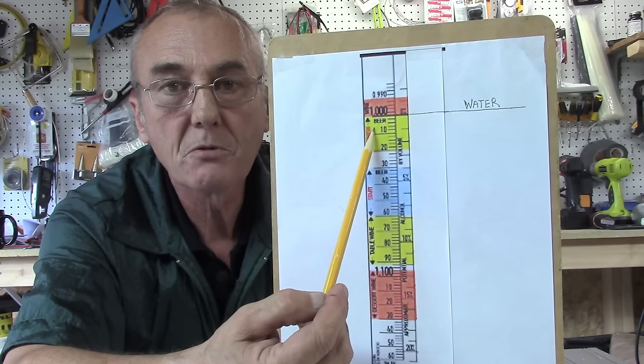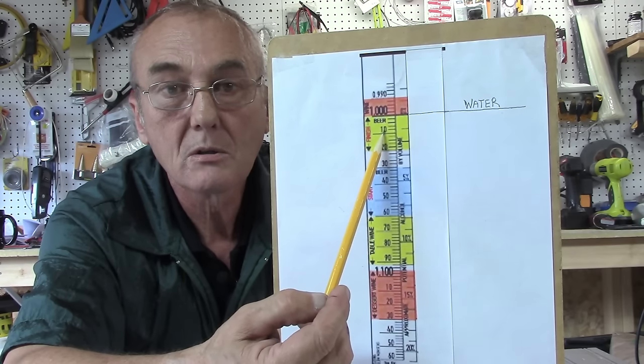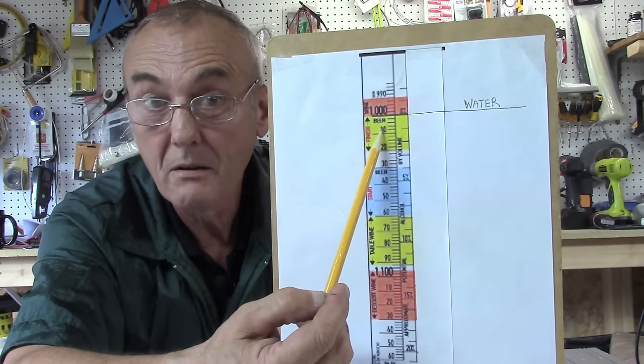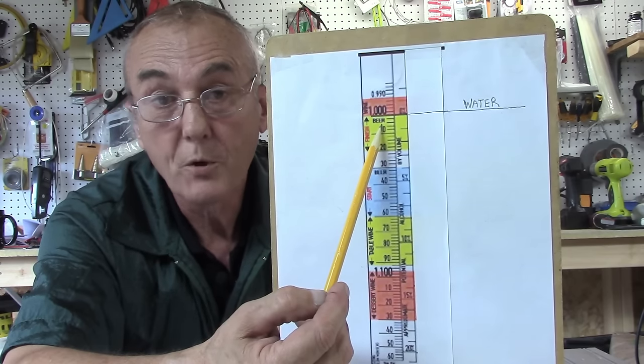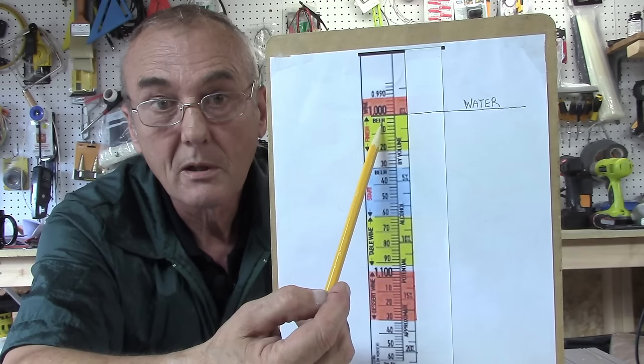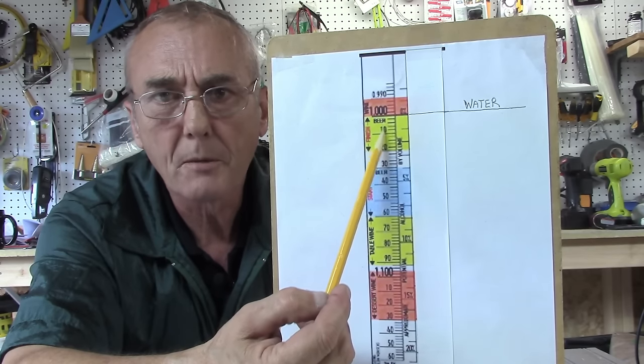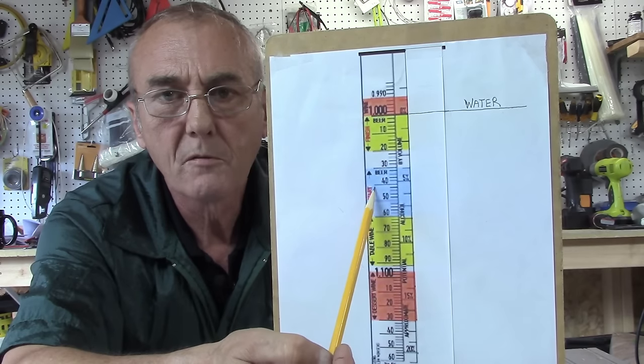After that, it goes up incrementally - there's 10, 20, so that would be 1.010, sometimes known as 10-10. Different people say it different ways. We normally just say 1.010, but if you say 10-10 we'll know what you're talking about. Then there's 20, of course 30, 40, 50 - it continues on.